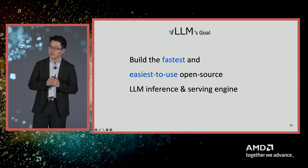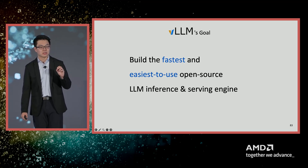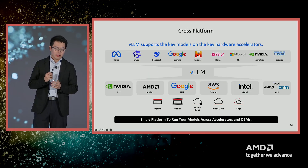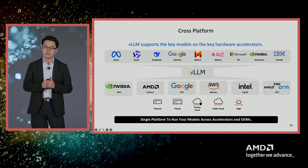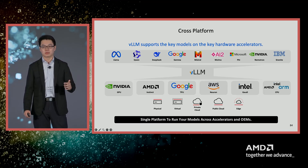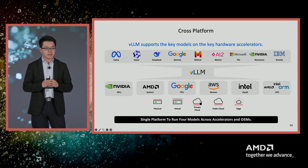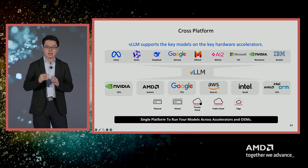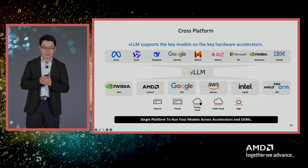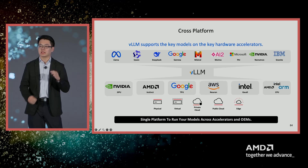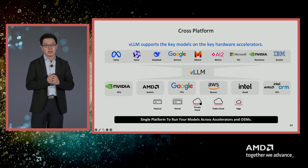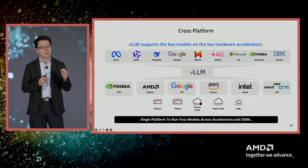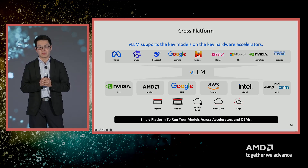VLM was born about two years ago, and our goal has been building the fastest and easiest to use open source LLM inference and serving engine. Over time, we ended up building VLM in collaboration with the open source community, where on one side are all the open source model providers — Llama, Qwen, and a lot more — and on the other side are all the hardware vendors including AMD. In the middle is VLM, where we support more than 100 model architectures, as well as all these hardware vendors, with all the optimizations necessary for open source large language model inference on data center hardware.